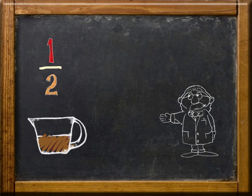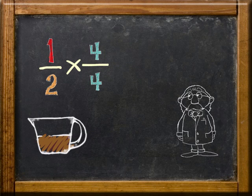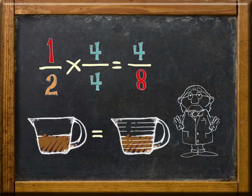Finally, if I multiply one-half by four over four, I'll end up with four-eighths cup of packed brown sugar.